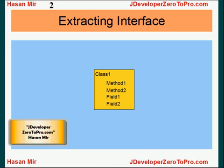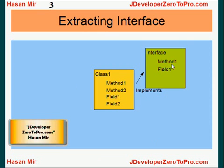What we want to do is extract an interface out of this class, so this class would be implementing some interface. You can tell JDeveloper that you want to extract an interface, and JDeveloper will give you a list of all the methods and fields of the class, so you pick which ones would be part of the interface. Let's say you chose Method 1 and Field 1. An interface is simply a list of methods and fields that a class should have if it is implementing that interface.